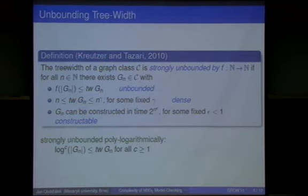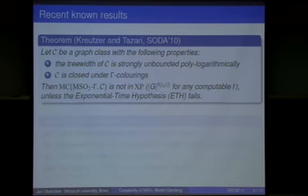The tree-width of graph GN is between N and N to something - this is called the density requirement. We don't want very big gaps in the sizes of those graphs. The third requirement says that graph GN can be constructed in time 2^(N^ε) for some epsilon. This is strongly unbounded polylogarithmically, meaning log^C of the size of the graph must be smaller than tree-width for all C.